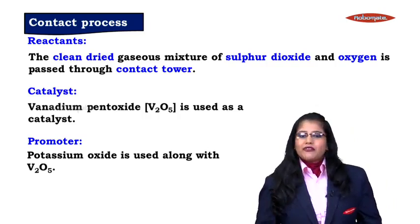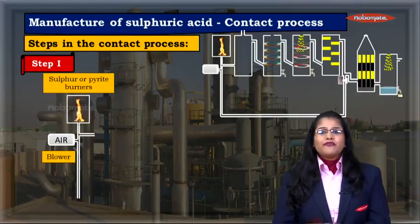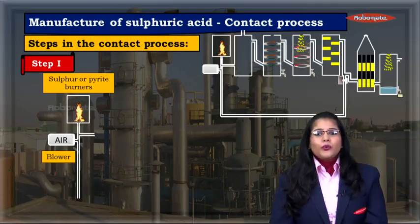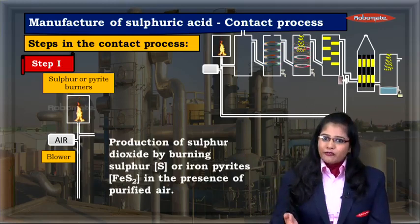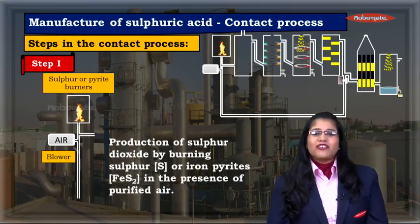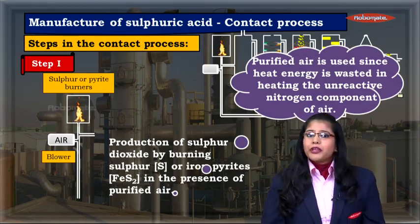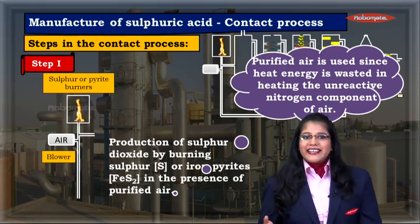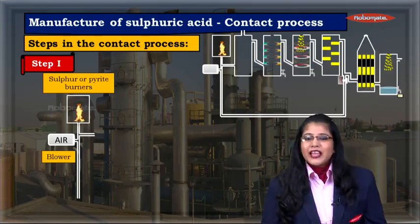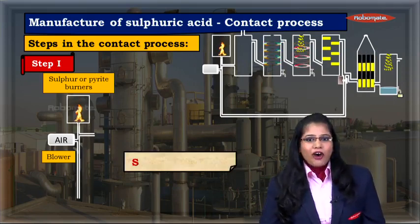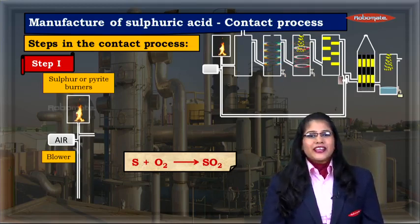Let us first study the step where we are forming sulphur dioxide. This is done in the first chamber — the blower and sulphur or pyrite burner. Sulphur or iron pyrites are burnt in the presence of purified air. We use purified air because heat energy would be wasted in heating the unreactive nitrogen component of raw air. The first reaction, if using sulphur, is: S + O2 → SO2. As we can see, this reaction is already balanced.